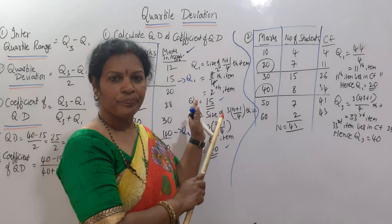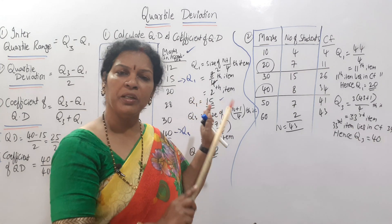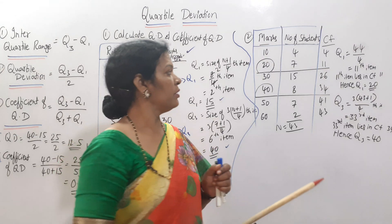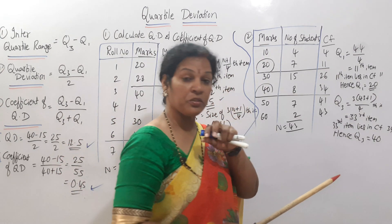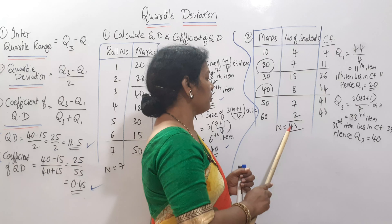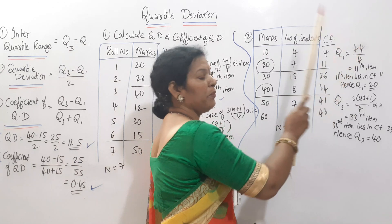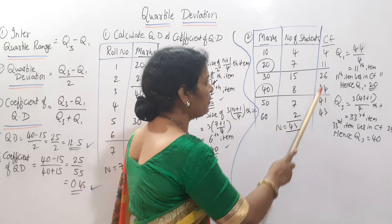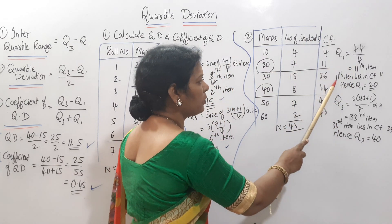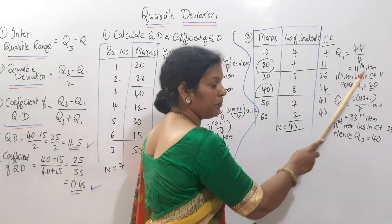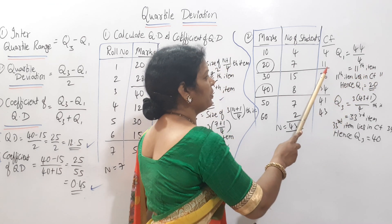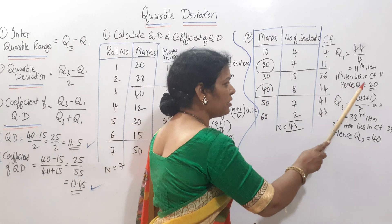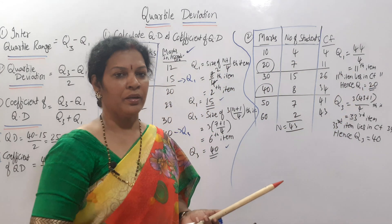The formulas for individual and discrete series are the same. Q1 = (N+1)/4th item. Here N=43, so (43+1)/4 = 44/4 = 11th item. Looking at the cumulative frequency column, the 11th item lies in the CF corresponding to Q1 = 20. Hence Q1 is equal to 20.